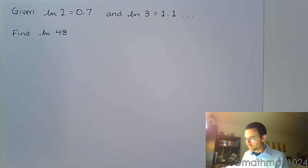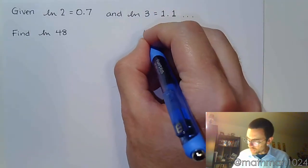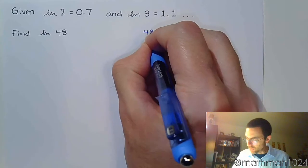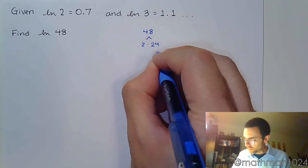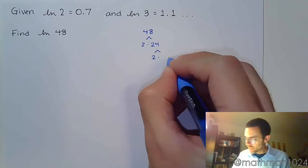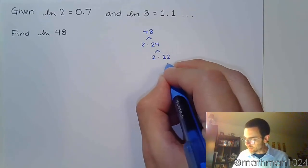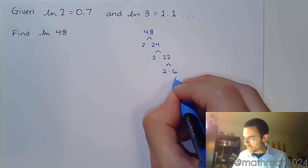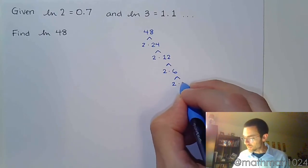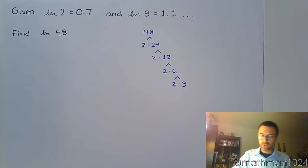So maybe off to the side we think about what 48 is. If you do a factor tree for 48, we've got 2 times 24, 2 goes in there 12 times, 2 goes into 12 six times, and then 2 goes into 6 three times. So you get your prime factorization.